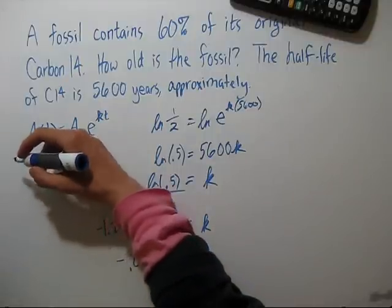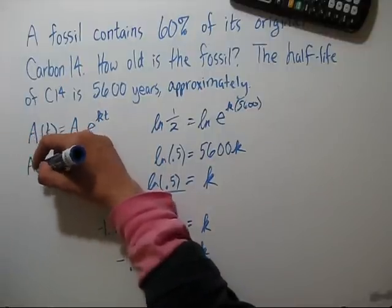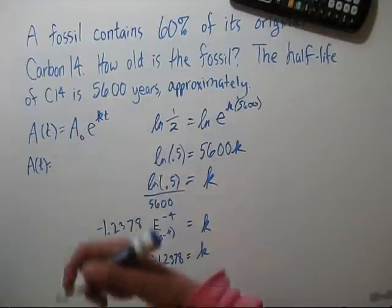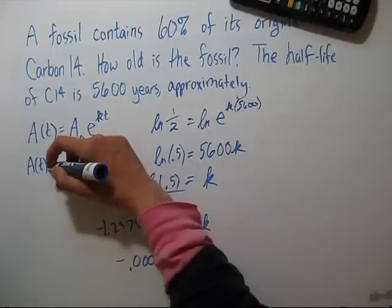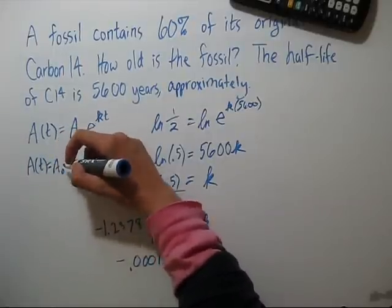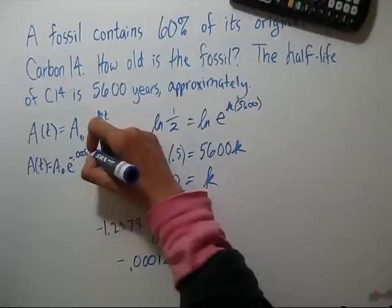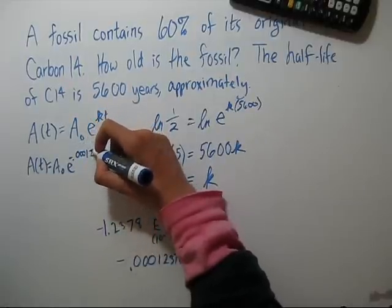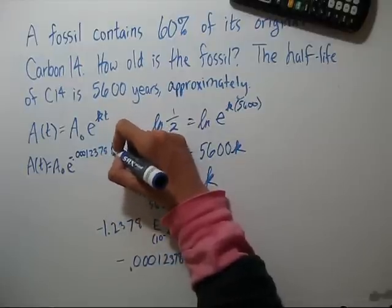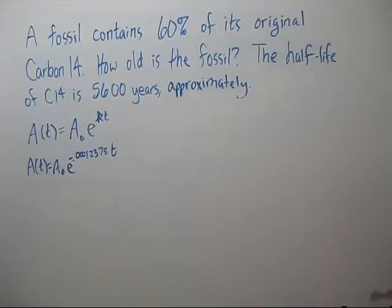So our equation is going to be A(t) equals A-naught e to the negative .00012378 times t. Now let's find out how old the fossil is.